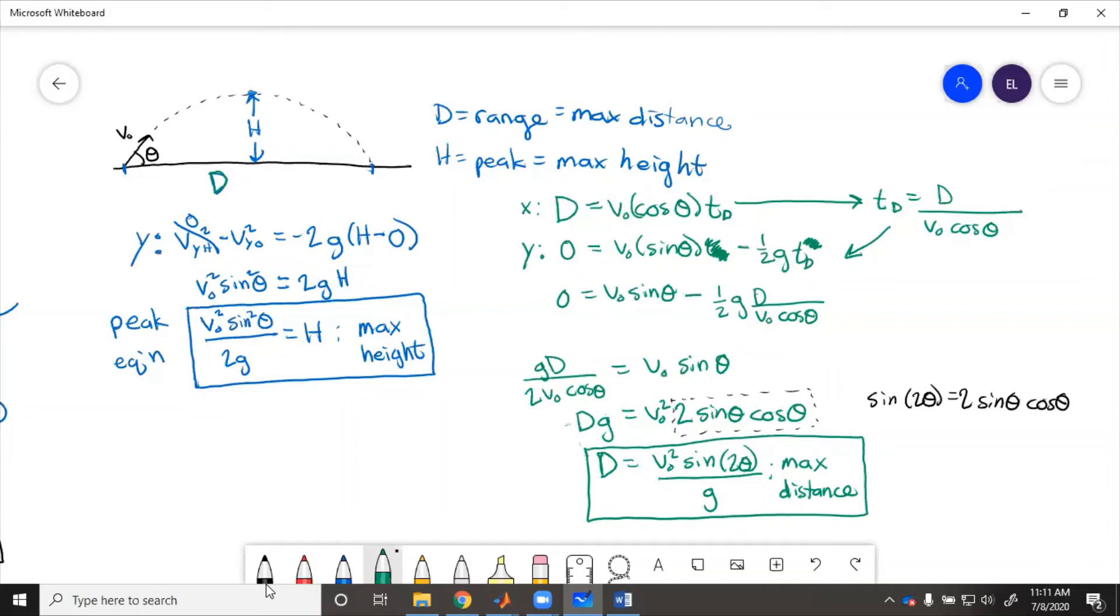And it is known as the range equation. So you can use these two shortcut equations if the question asks, you know, how high did something go? How far did something go? But just keep in mind that they are for when the projectile launches and lands at the same height.